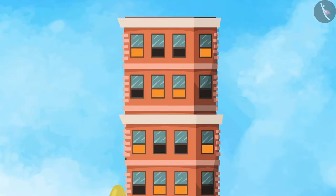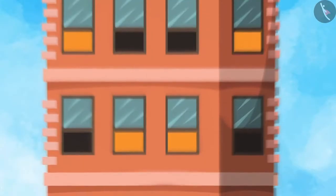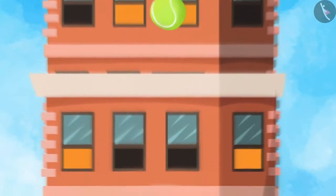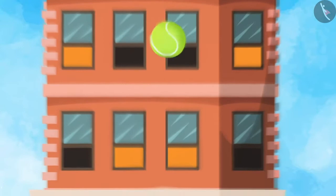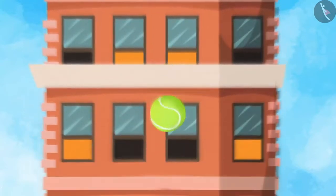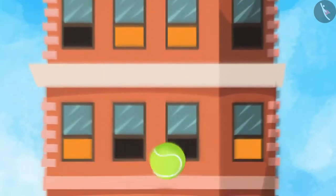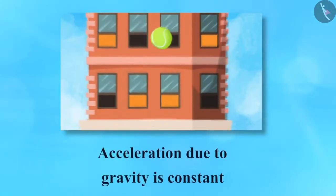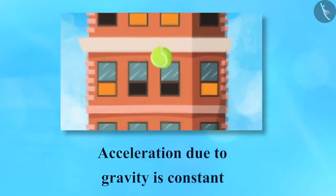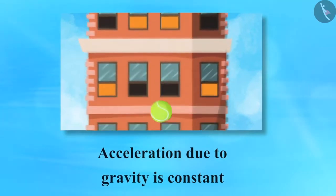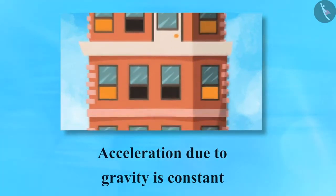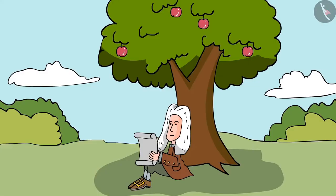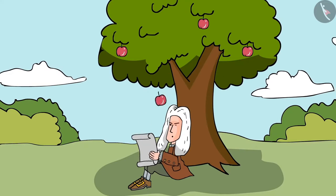Let's take another example. Take a ball to the roof of your house and release it. You will observe that the ball is in uniform accelerated motion. This is because the acceleration due to gravity is constant. You will learn about gravity in Chapter 10.